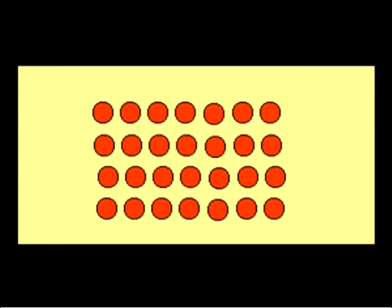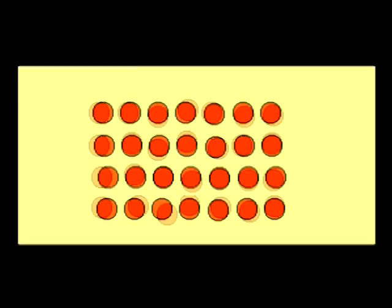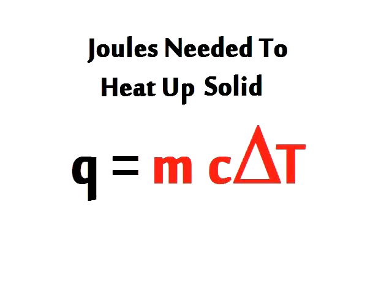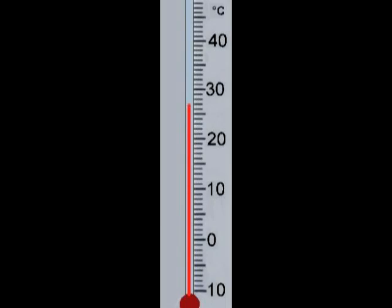Molecules of a solid just vibrate in place; as you add some heat they vibrate at a faster pace. The temperature increases nice and steadily. To calculate the joules you need, use mc delta T.